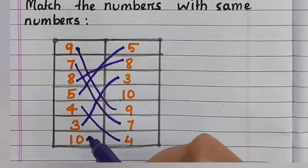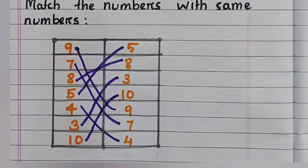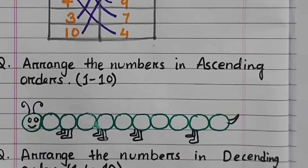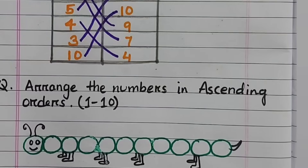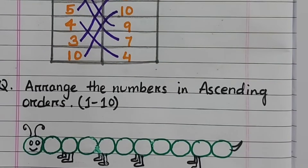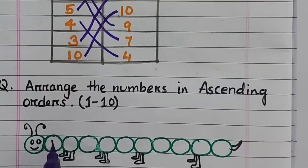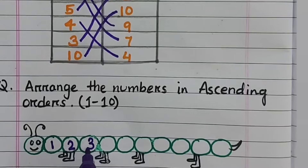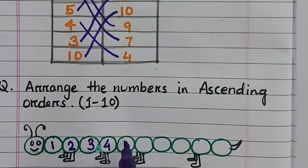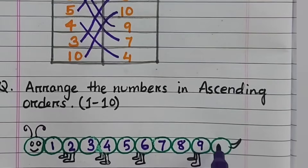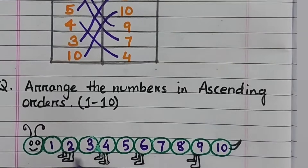Next question: arrange the numbers in ascending order. Ascending means small to big. The small number is one, then two, three, four, five, six, seven, eight, nine, ten — from small to big.